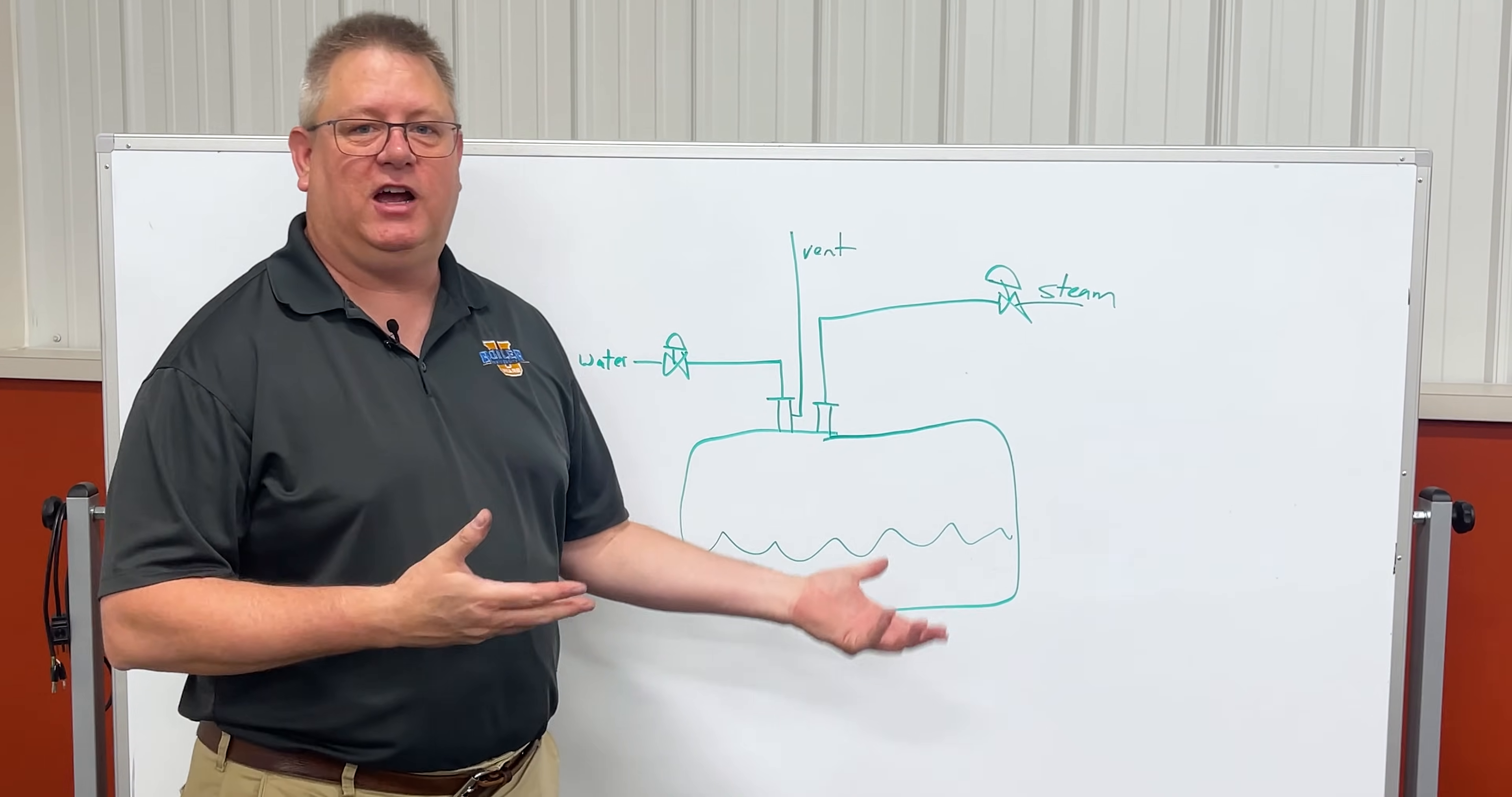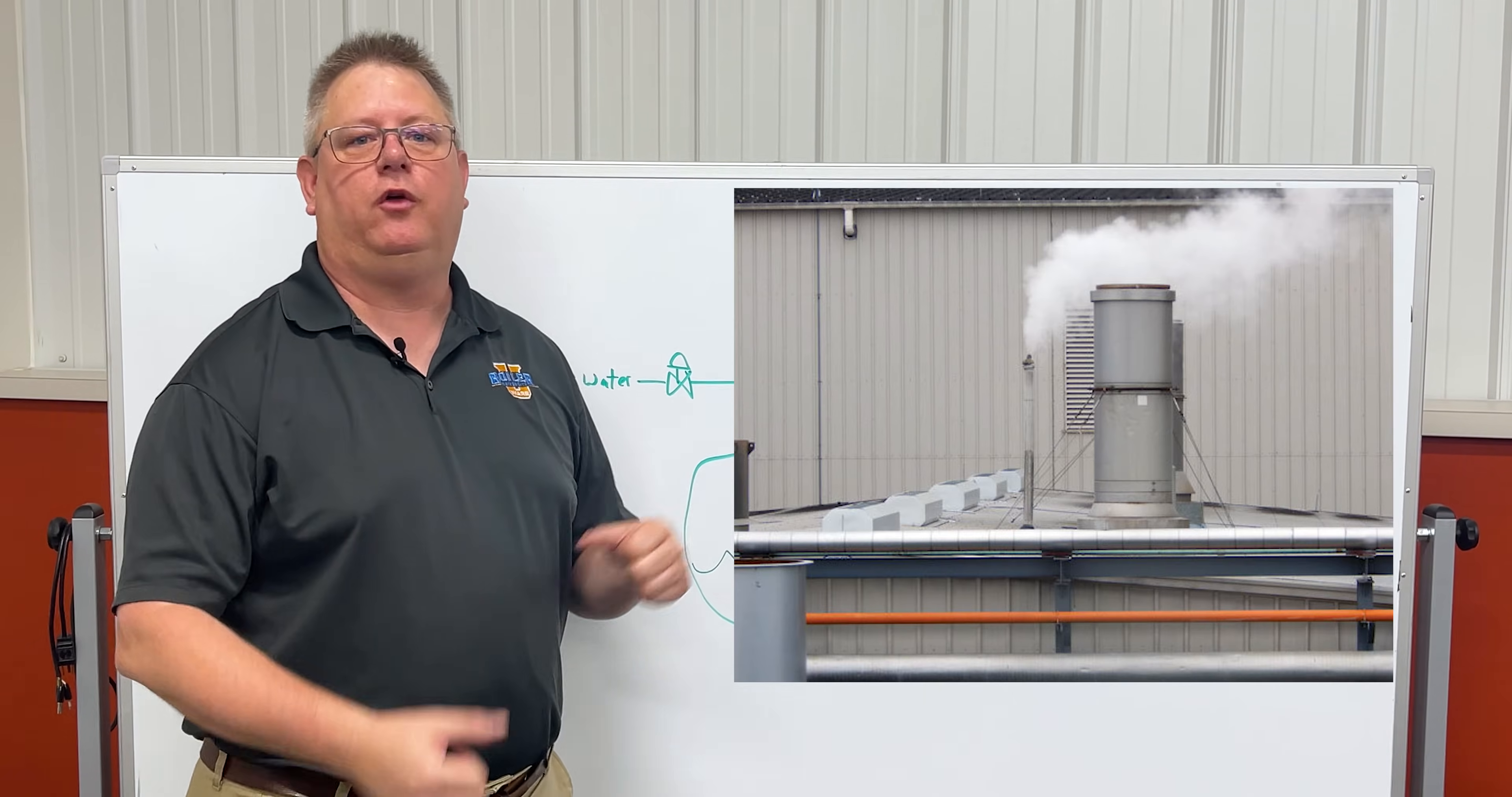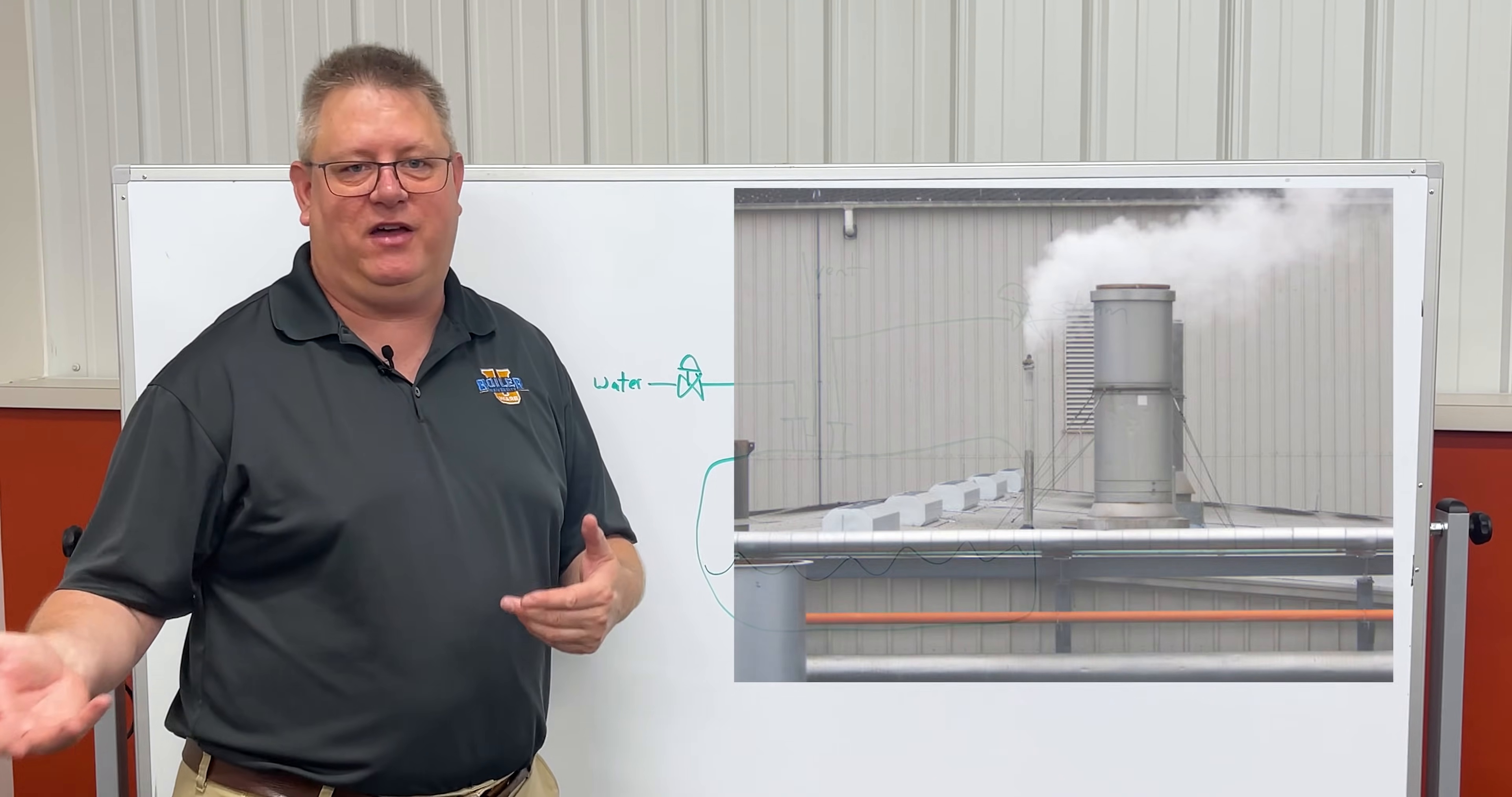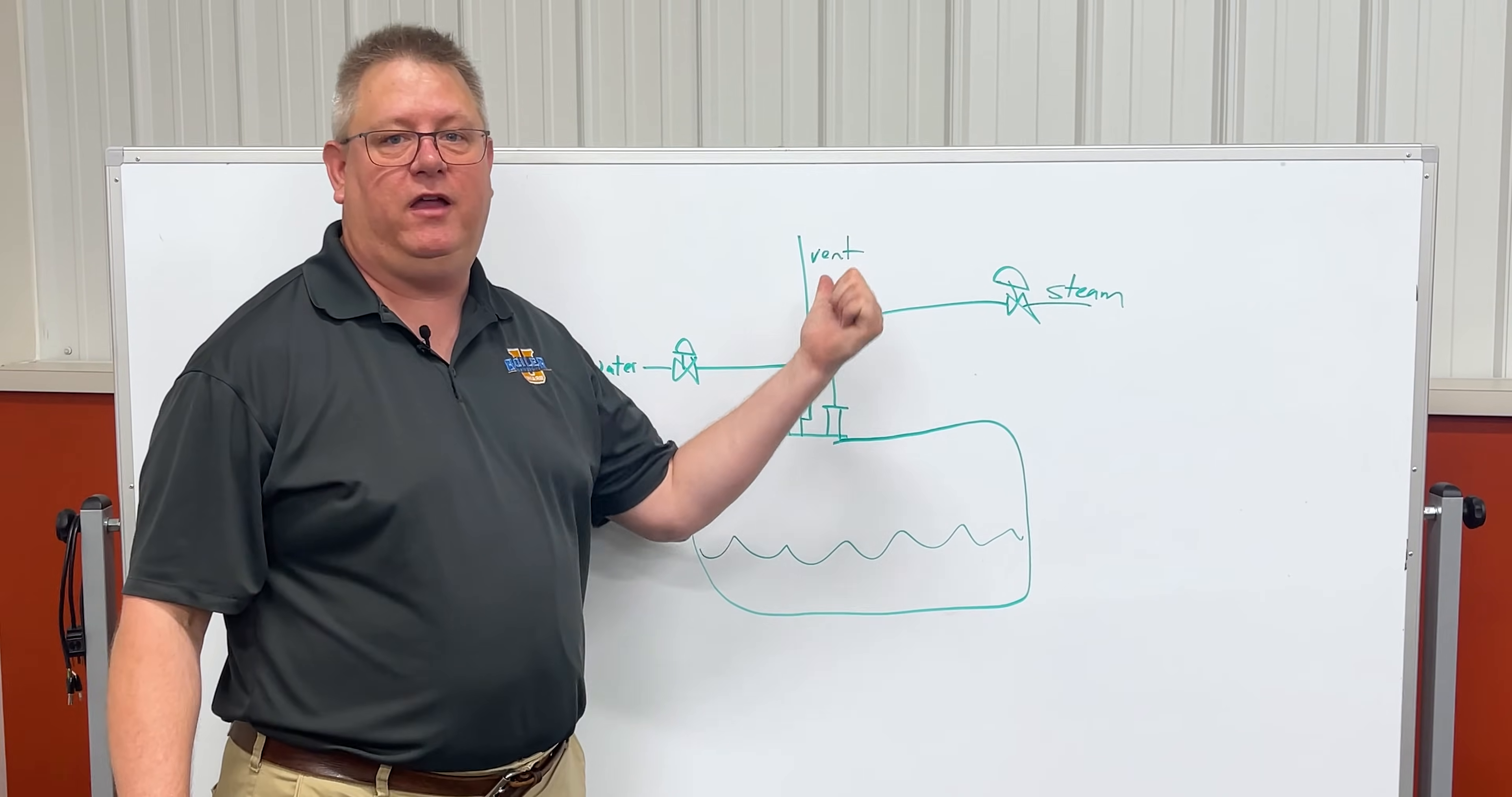One thing we're going to check on our deaerator is not actually inside the boiler room—we're going to check it on the roof. You may have to go up on the roof, or you may be able to see the vent from the ground somewhere, but we want to get a visual on this vent.